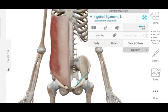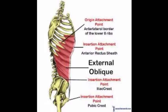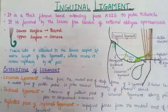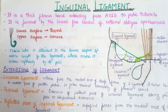The external oblique muscle originates from the anterolateral border of the lower eight ribs. It has one origin but three insertions: first, the anterior rectus sheath; second, the iliac crest; and third, the pubic crest. These are the origin and insertions of the external oblique muscle as seen in the 3D model and diagram.